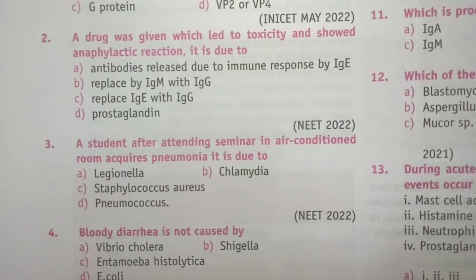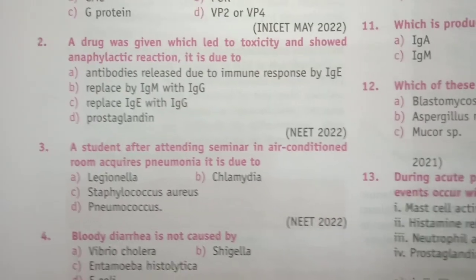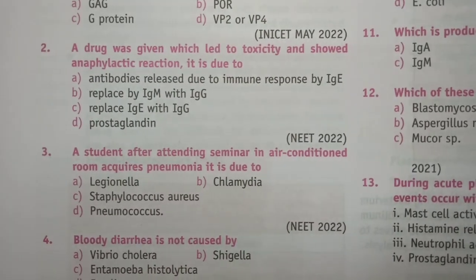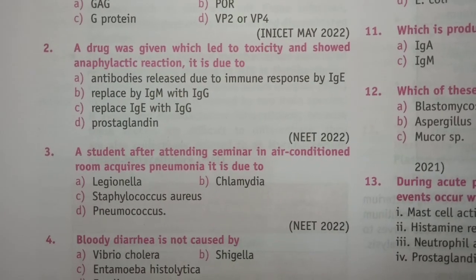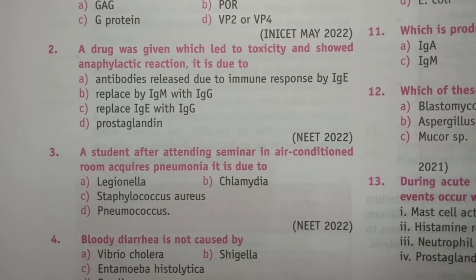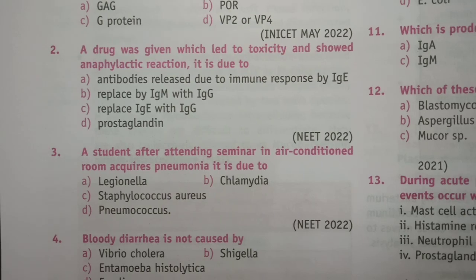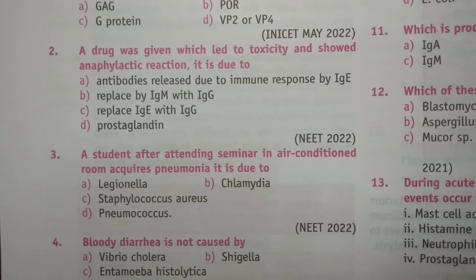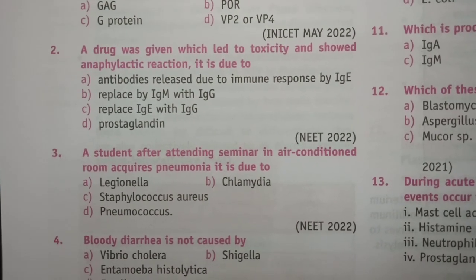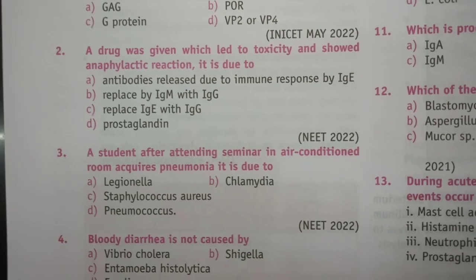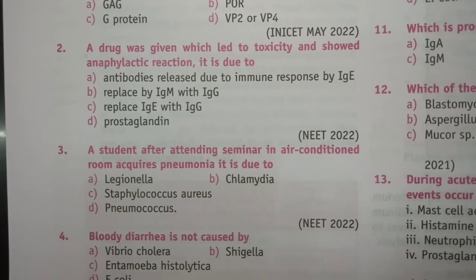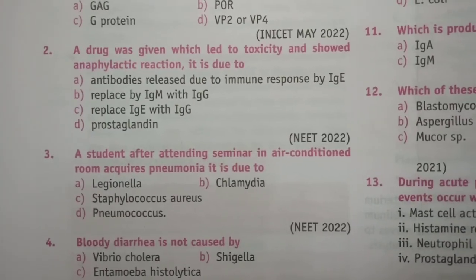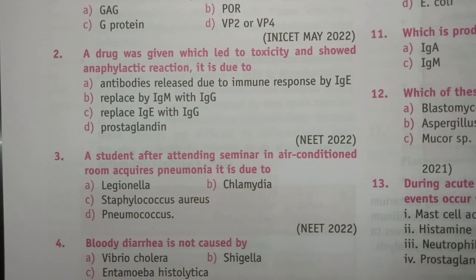Question 3: A student, after attending a seminar in an air-conditioned room, acquires pneumonia. It is due to: Legionella, Chlamydia, Staph aureus, or Pneumococcus. The answer is A, Legionella.